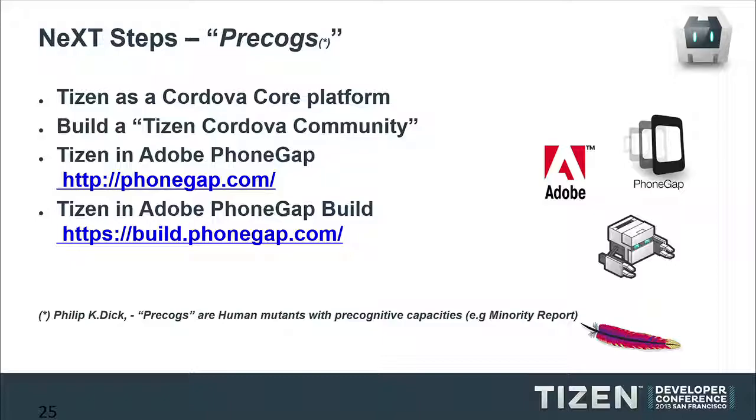These steps depend on successfully releasing devices, which should occur soon, and on having the interest of developers — which should come with the devices. Above all, it needs to be a success, and then we can gain the interest of Adobe in adding Tizen to PhoneGap Build. We have the application, we have the SDK, we are going to have devices — so we should attract developers willing to port applications to Tizen using Cordova.